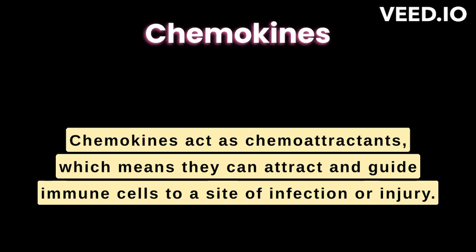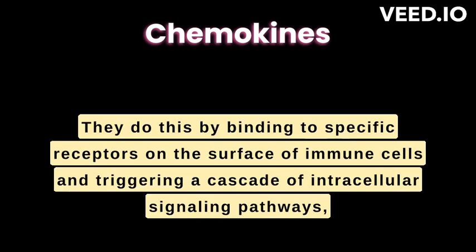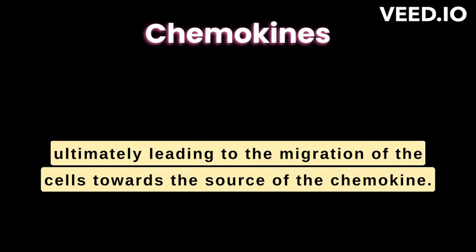Chemokines act as chemoattractants, which means they can attract and guide immune cells to the site of infection or injury. They do this by binding to specific receptors on the surface of immune cells and triggering a cascade of intracellular signaling pathways, ultimately leading to the migration of the cells towards the source of the chemokine.